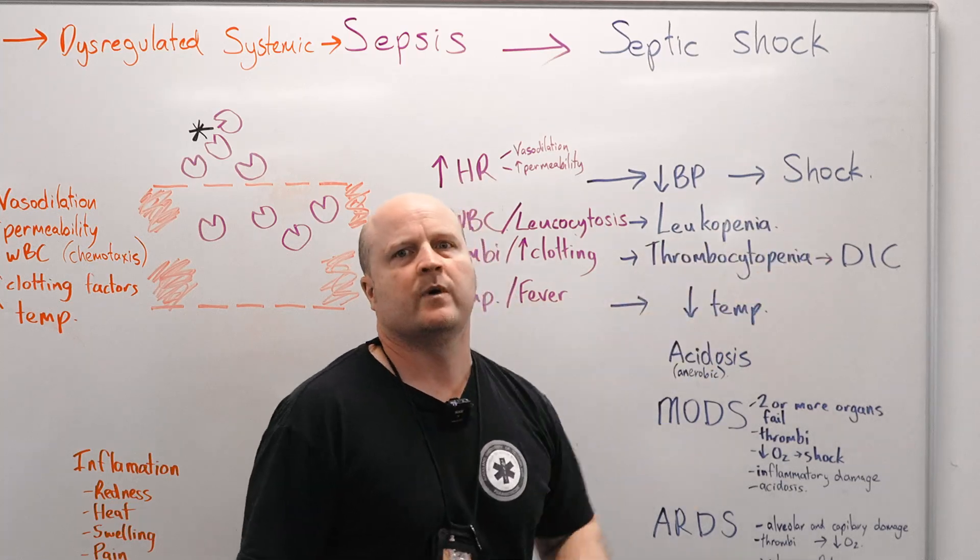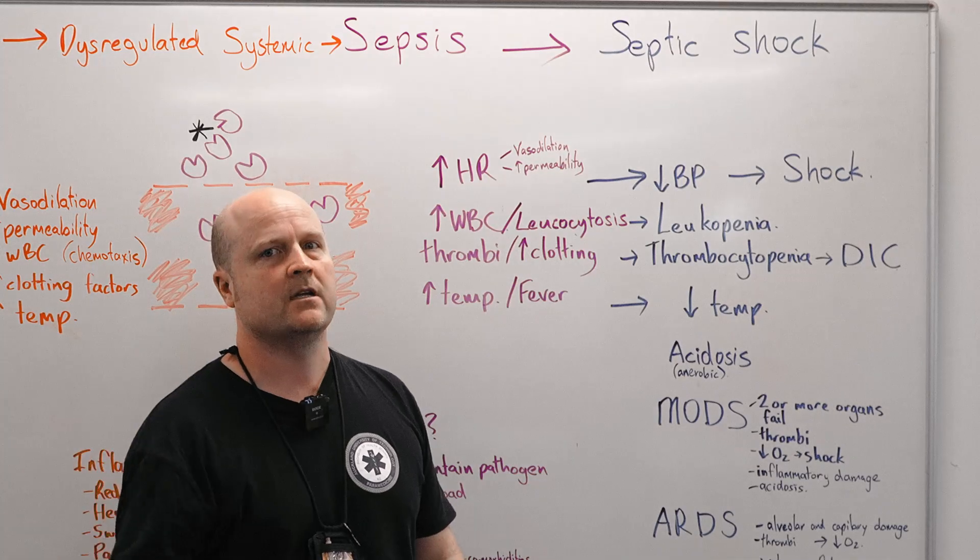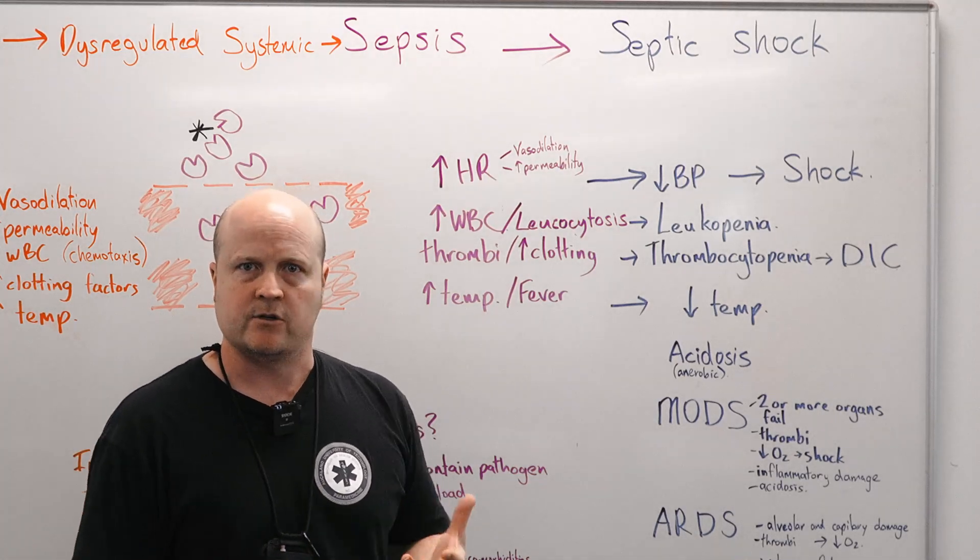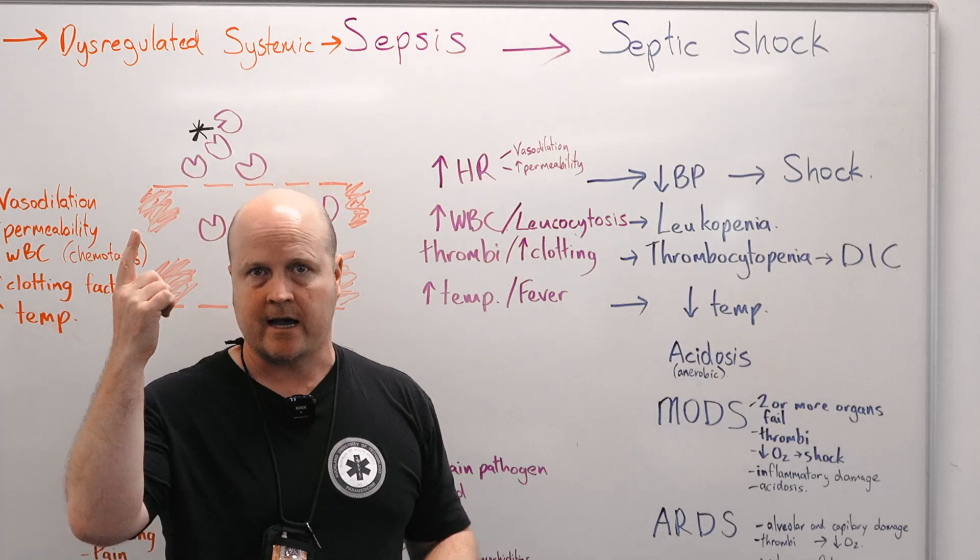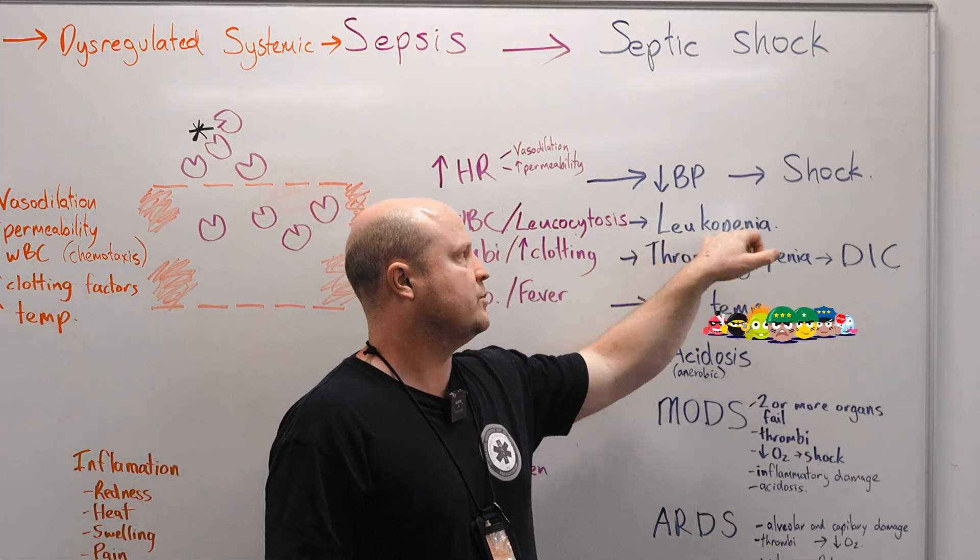So remember shock is where we have a trouble with circulating enough oxygen to provide our cells and tissues. Initially our white blood cell count shot up, but eventually as sepsis progresses, we're going to start running out and we're going to lower our white blood cell count, which is leukopenia.